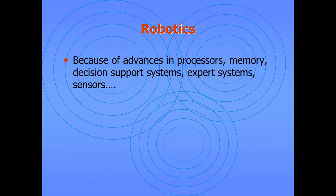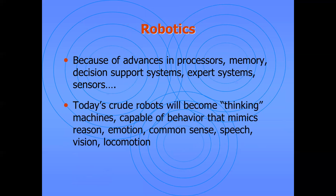Because of advances in processors, memory, decision support systems, expert systems, and sensors, today's crude robots will become thinking machines capable of behavior that mimics reason, emotion, common sense, speech, vision, and information processing. That's all for today — thank you for your attention.